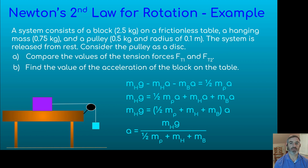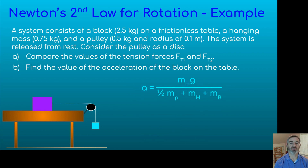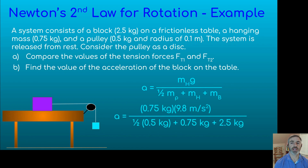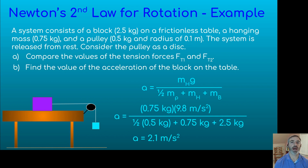Once we have that expression in terms of masses and constants, we substitute our values in for the masses and get an acceleration of 2.1 meters per second squared. This means the block on the table, the hanger, and the outermost edge of the pulley all share that acceleration.